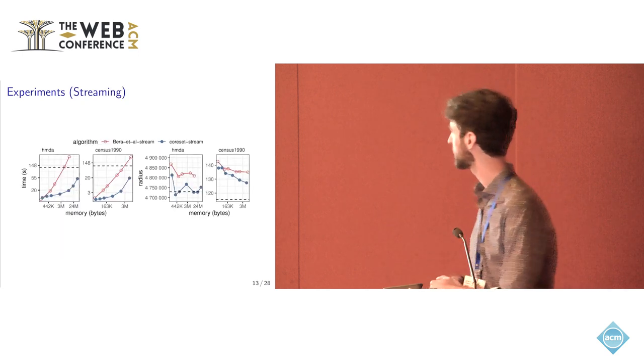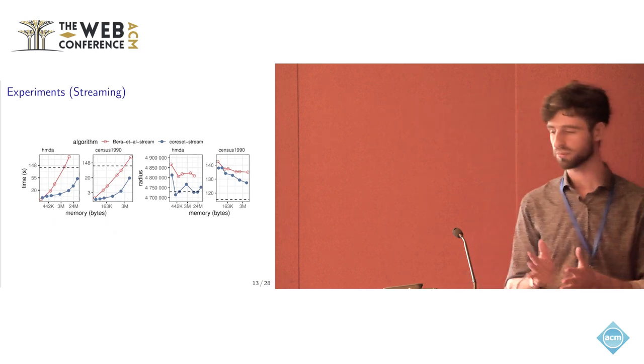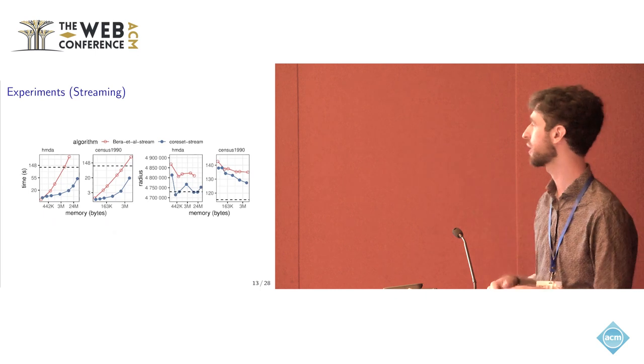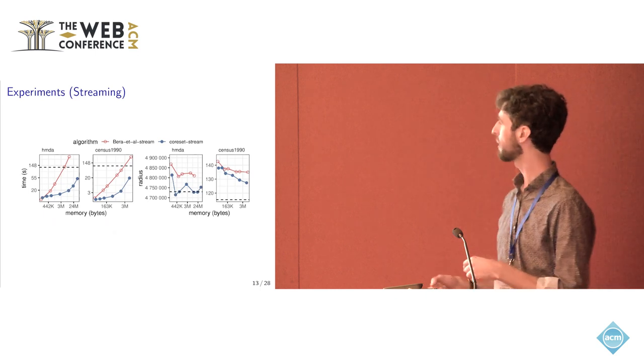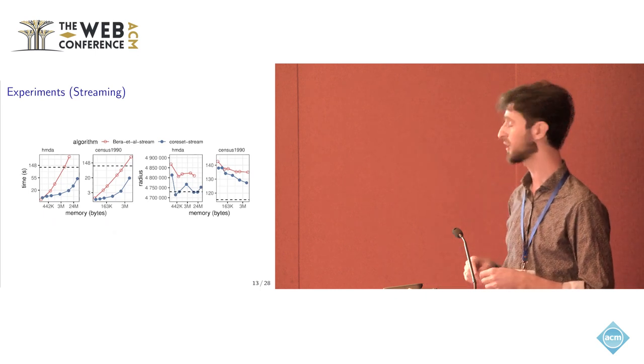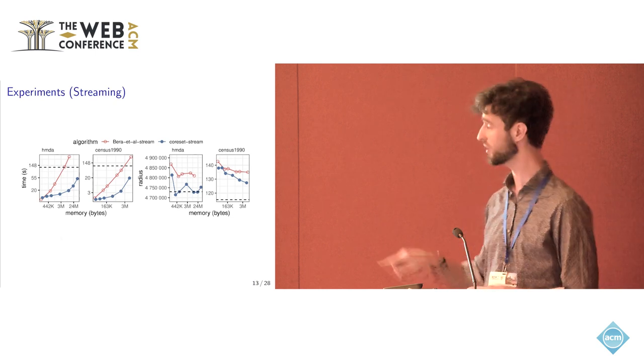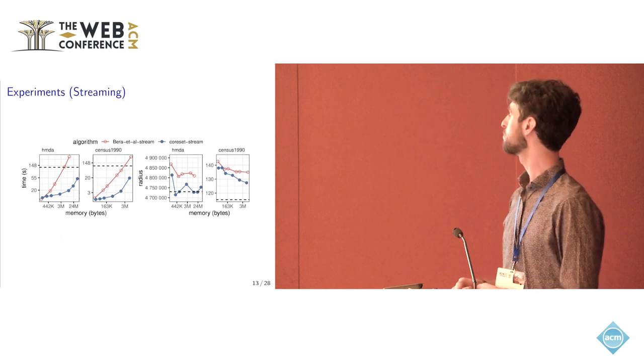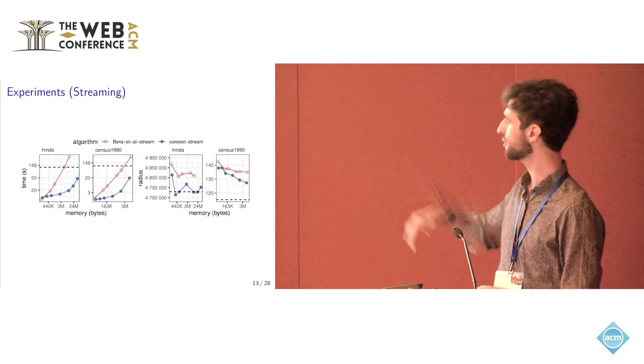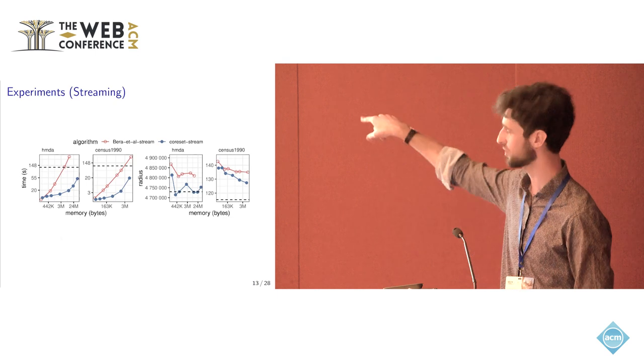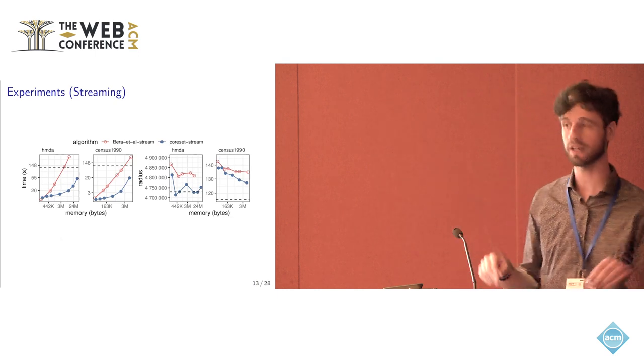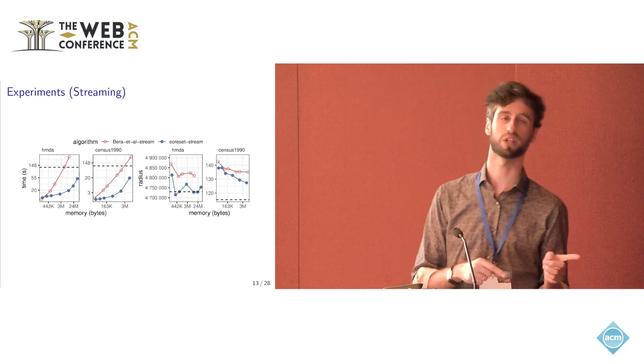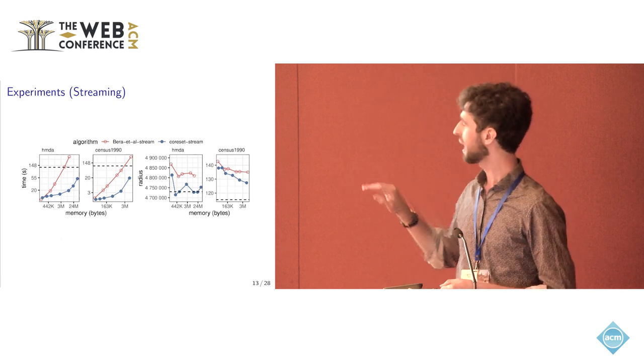I also have time to show the other results on the other two platforms. So in the streaming setting, what we have now, here I'm showing only the two largest datasets, and we are comparing with the red baseline, which is the baseline on the streaming. On the x-axis, we have the memory used by the streaming algorithm. And basically we can see that both approaches are pretty close. The dashed horizontal line is for reference, the best performance achieved in the sequential setting.